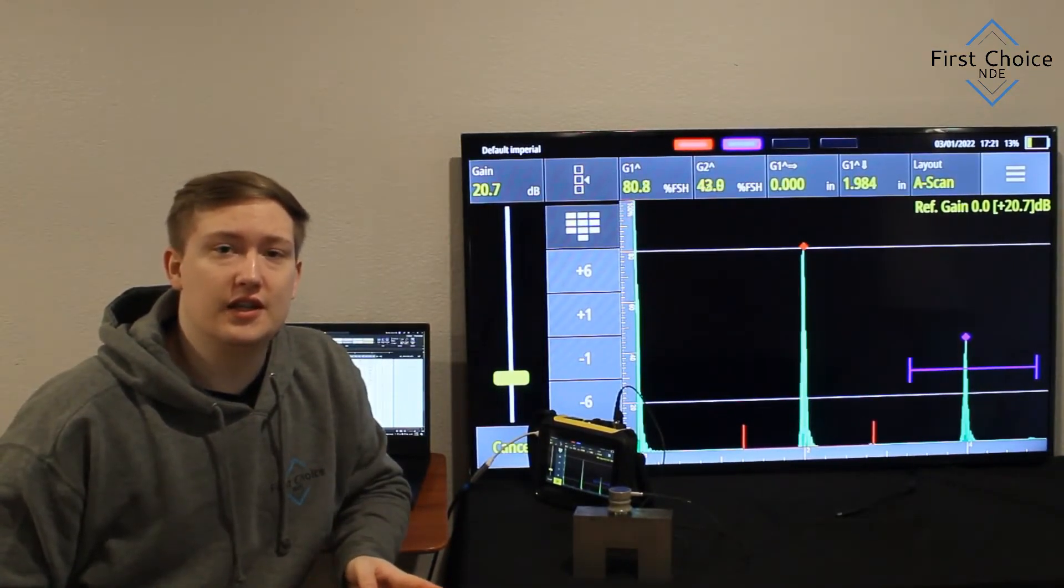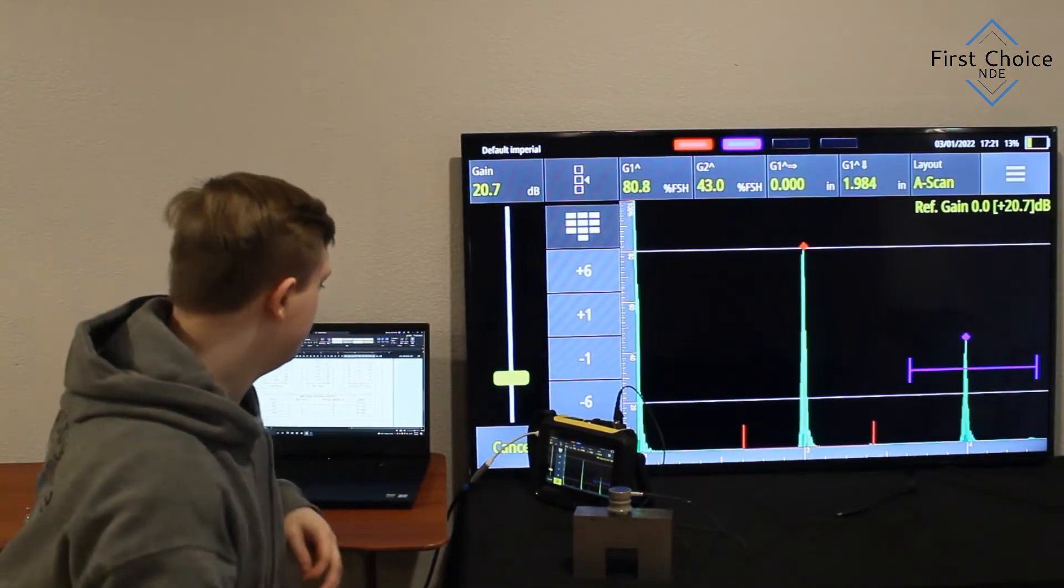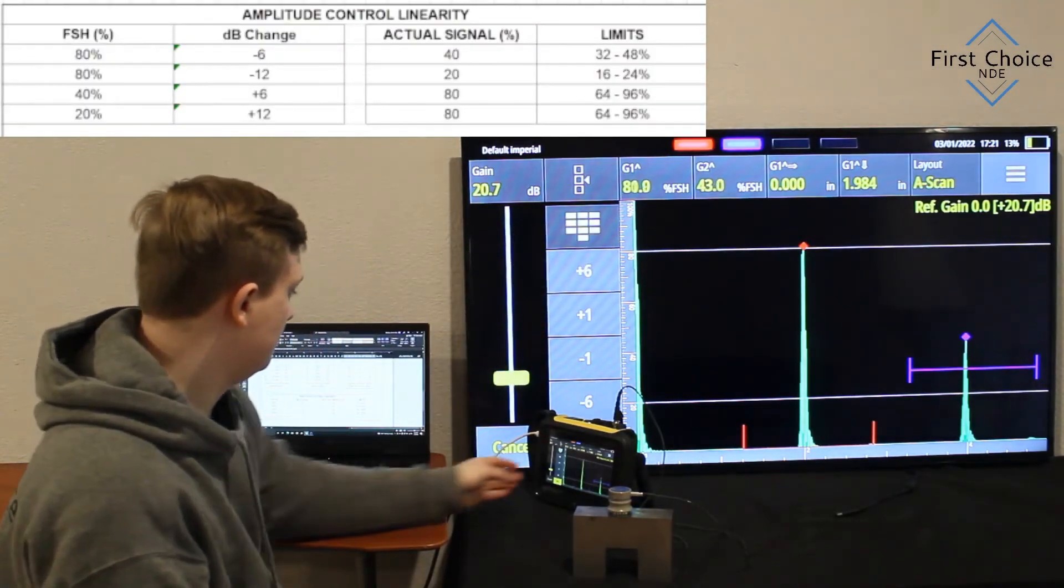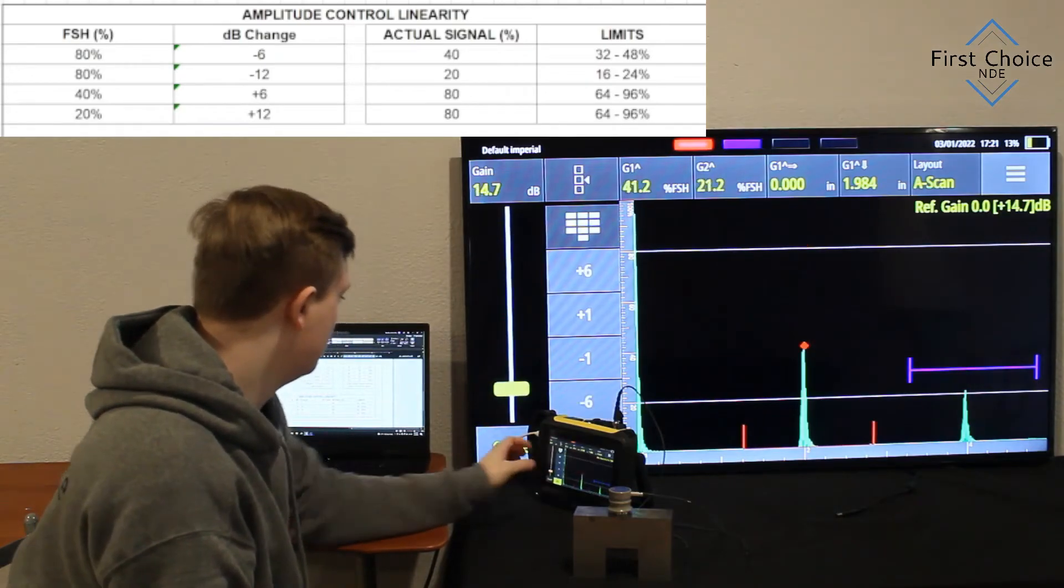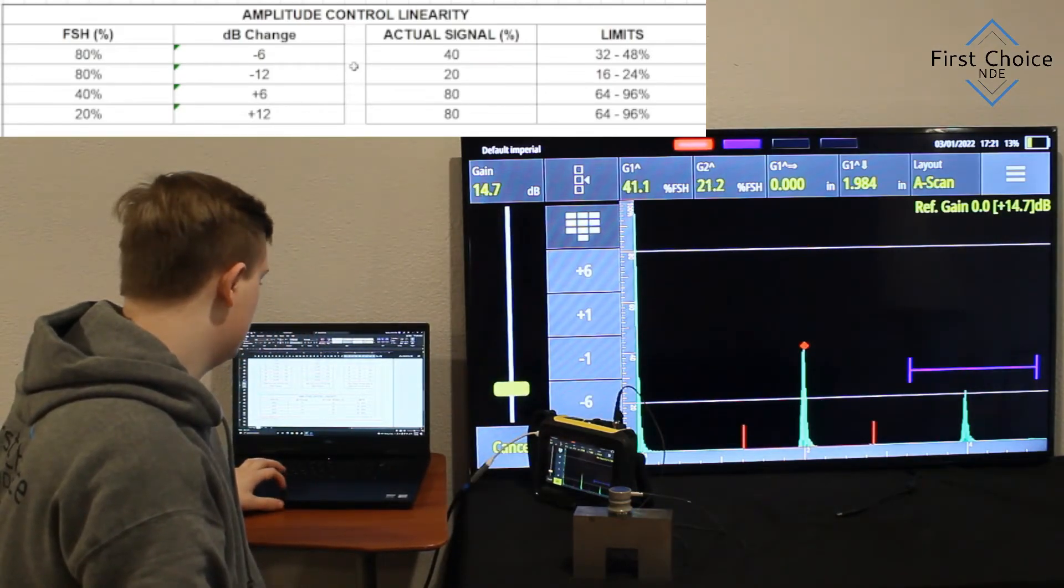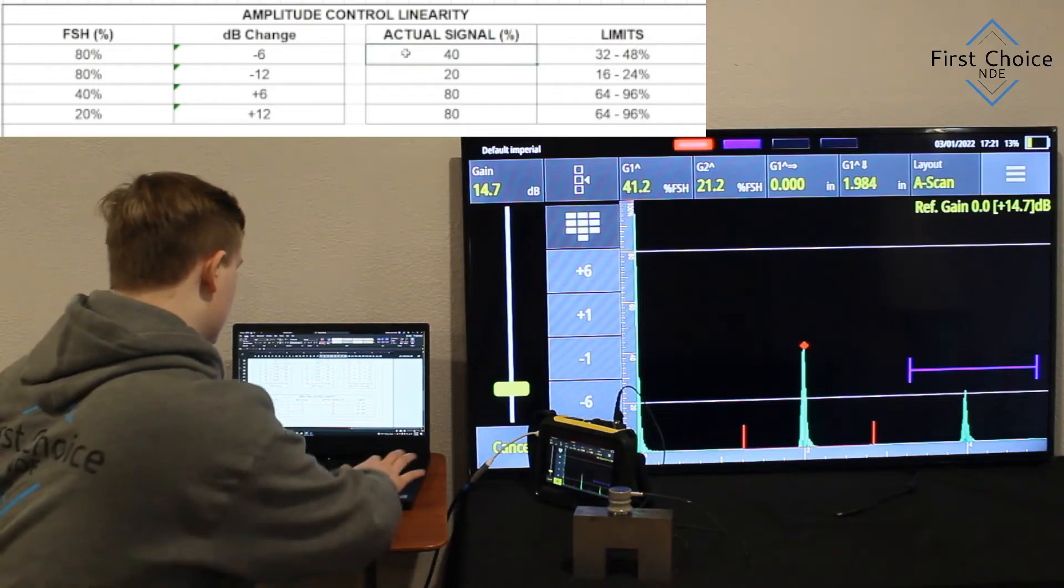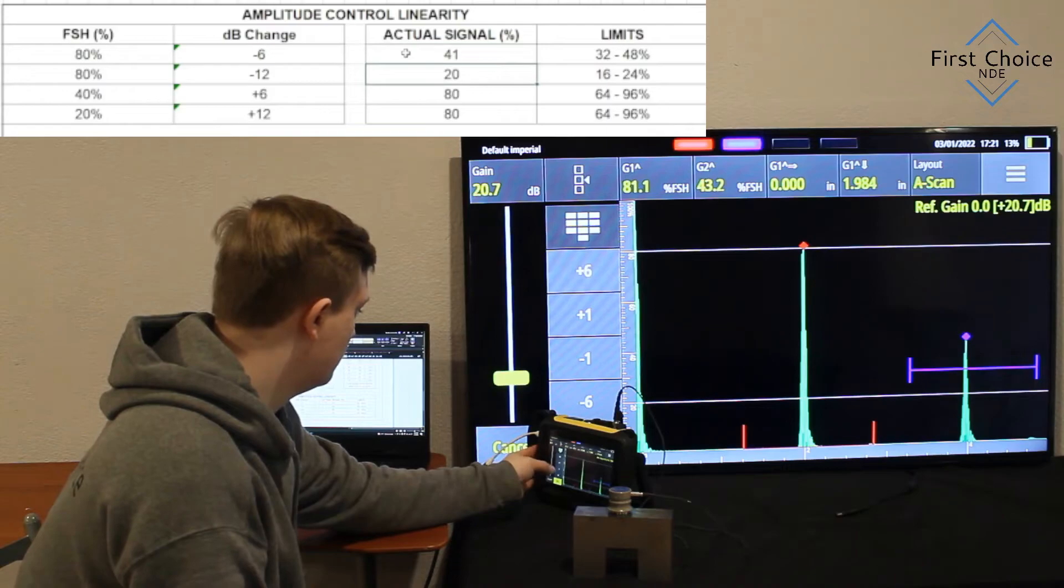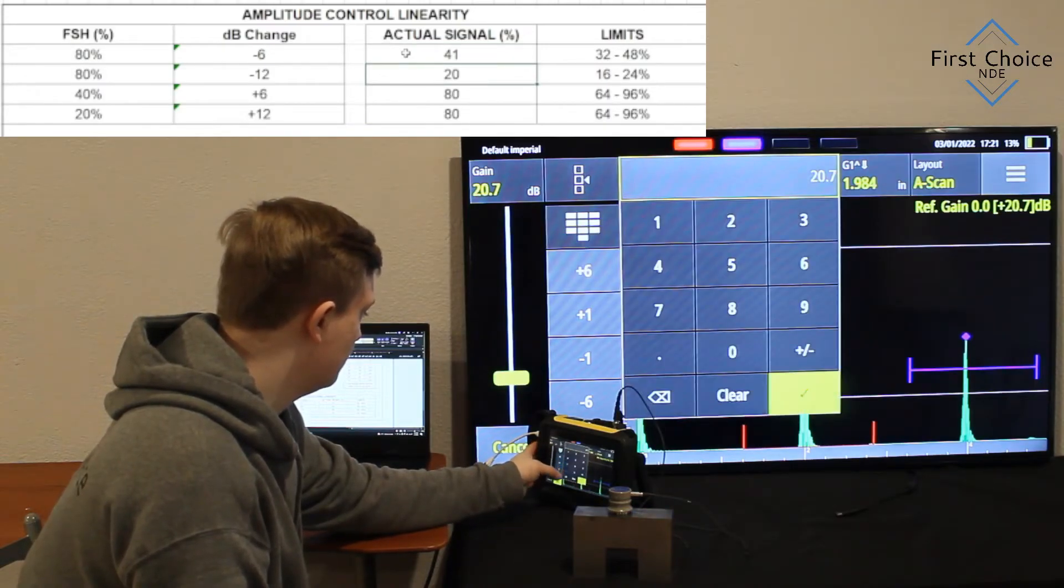And this is the amplitude control linearity. Alright, so what I'm doing right now, on the top left, is the Excel file. That way I'm inputting numbers in. So when you look on the left, you see the signal is at 80%. So what you do is you drop it 6 dB, and that should drop it 50% screen height. And so it should drop it to 40. It was, in our case, 41.